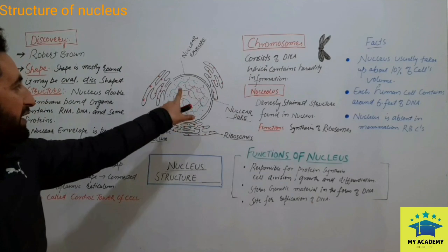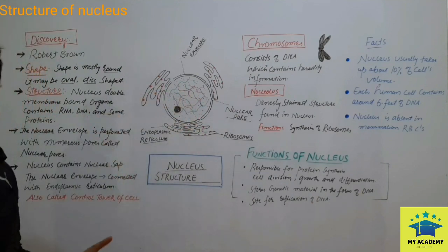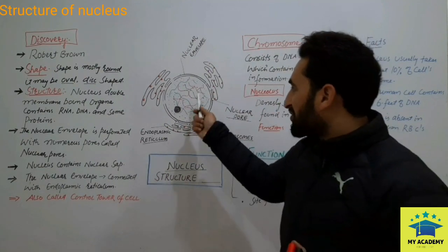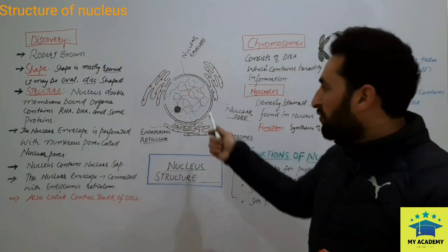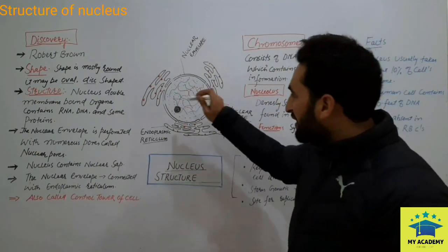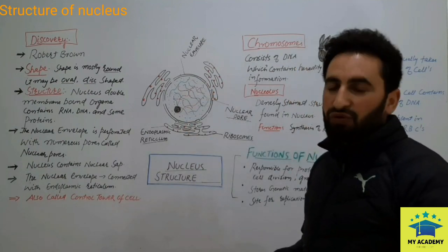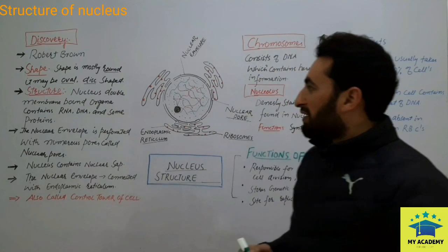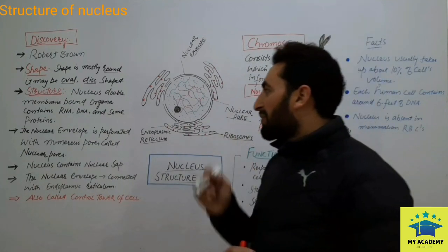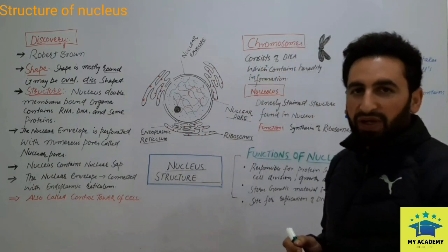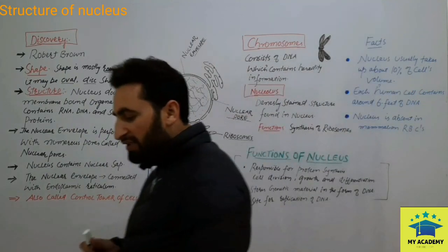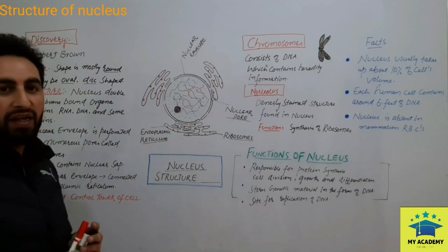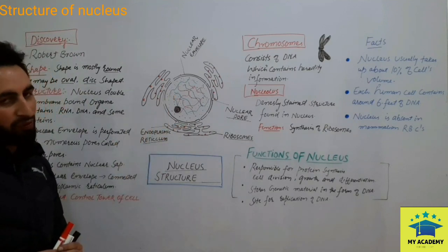The nucleus contains nuclear sap, or nucleoplasm. The nucleoplasm is the jelly-like fluid material within the nucleus. In this nucleoplasm, we have RNA, DNA, and proteins.